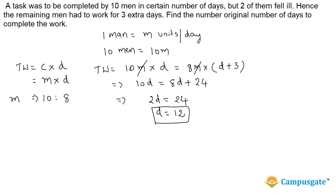If men are changing in the ratio 10 is to 8, how the days will change? Days are inversely proportional to the men, therefore days must change in the ratio 8 is to 10. So initially if they plan to complete the job in 8 days, now they are taking 10 days.